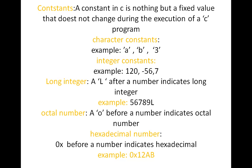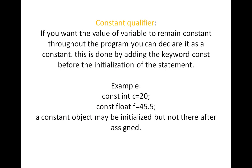So a constant in C is nothing but a fixed value that does not change during the execution of a C program. If I want to give any variable as a constant variable, I have to declare those variables initially in the program. Once declared, I cannot change those constants throughout the program.